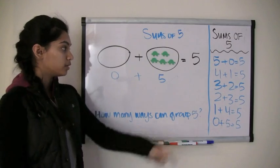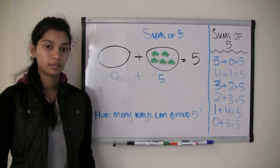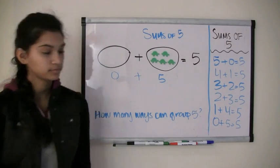So as you can see, we have one, two, three, four, five, six ways of grouping the number five. Bye-bye.